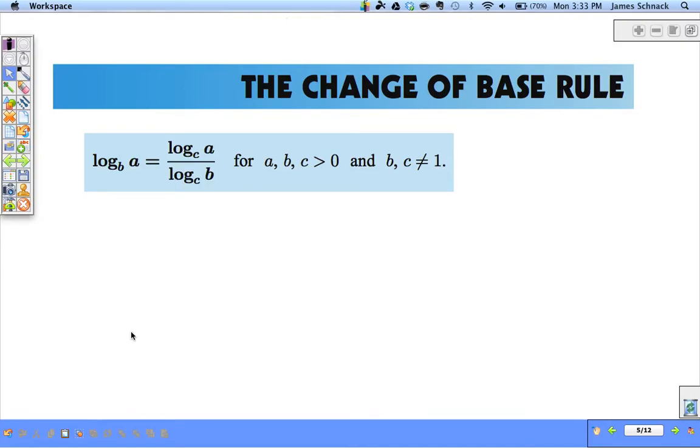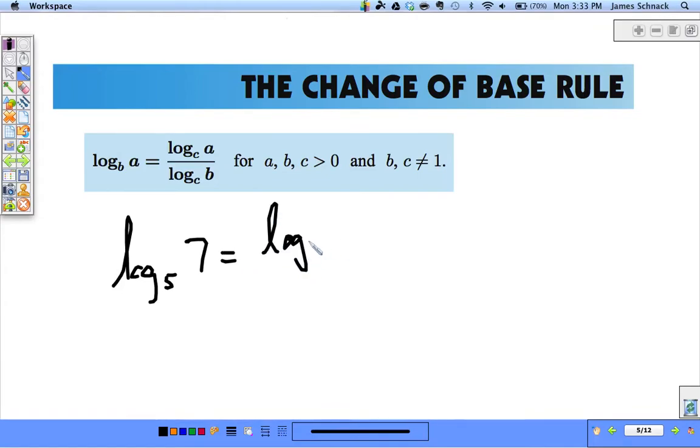So really what this is saying is that log base 5 of 7 is equal to the log base whatever I want of 7, usually it's a common log or natural log, divided by log base whatever I want of 5.